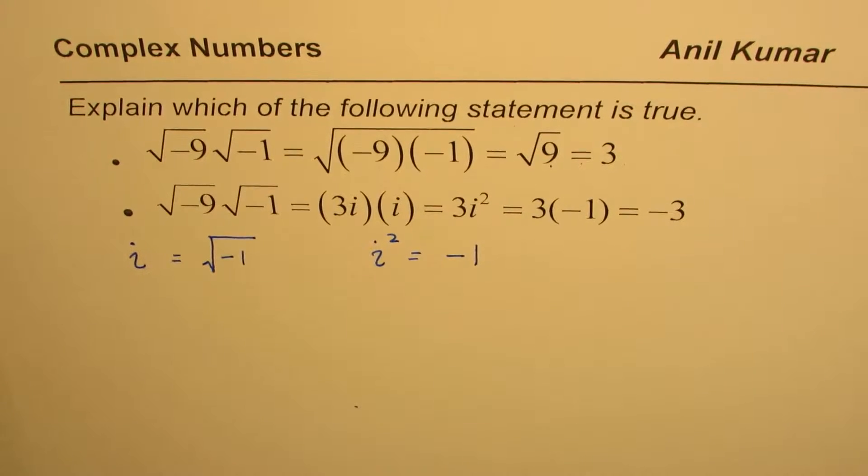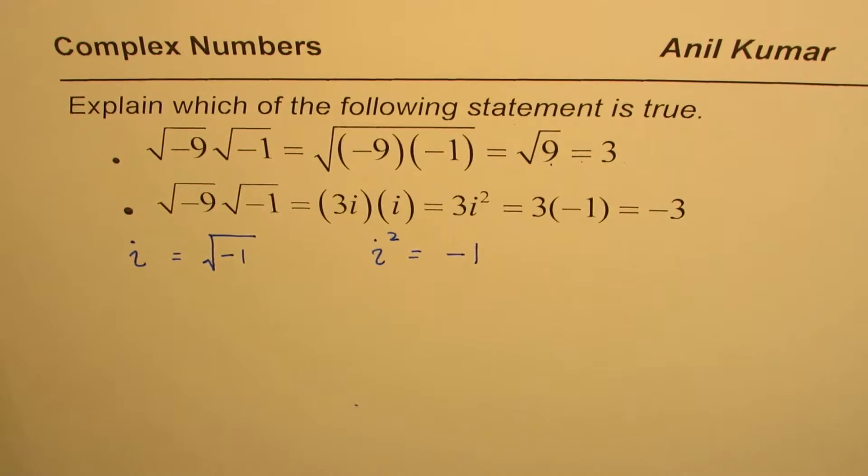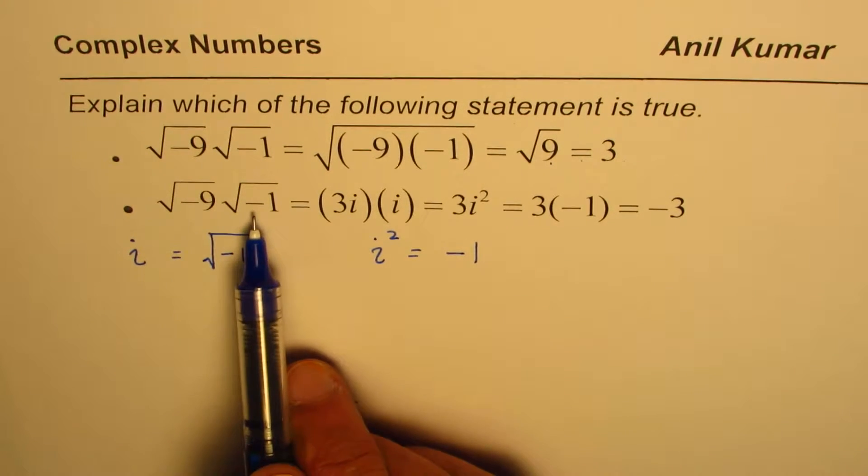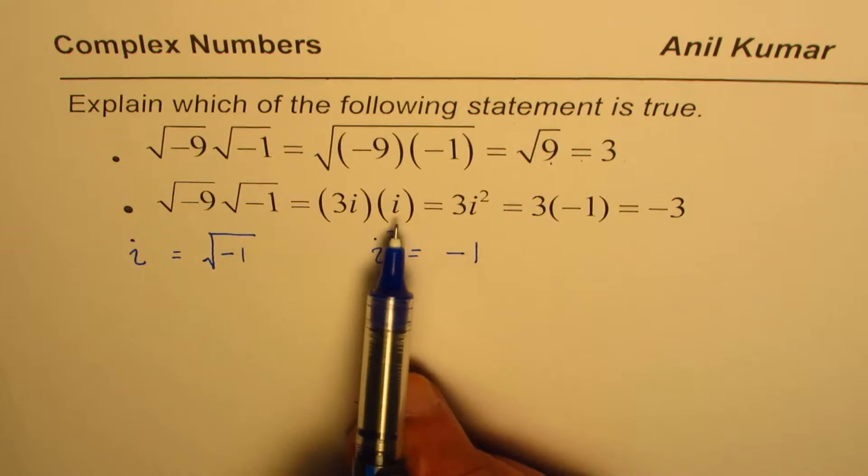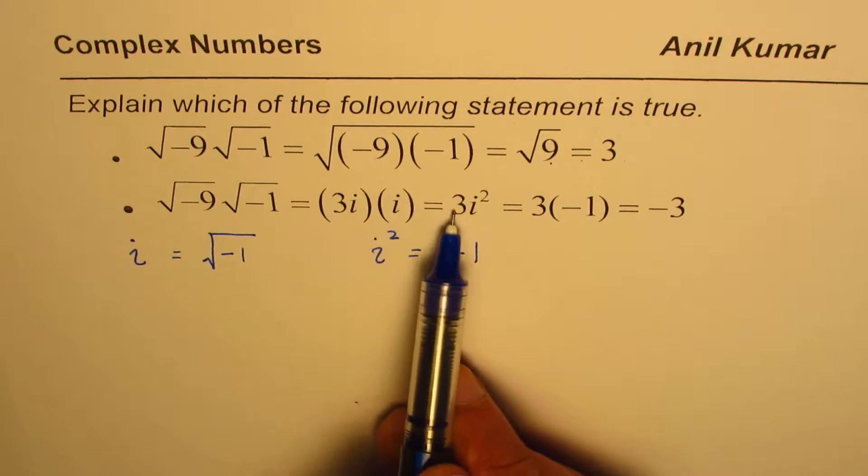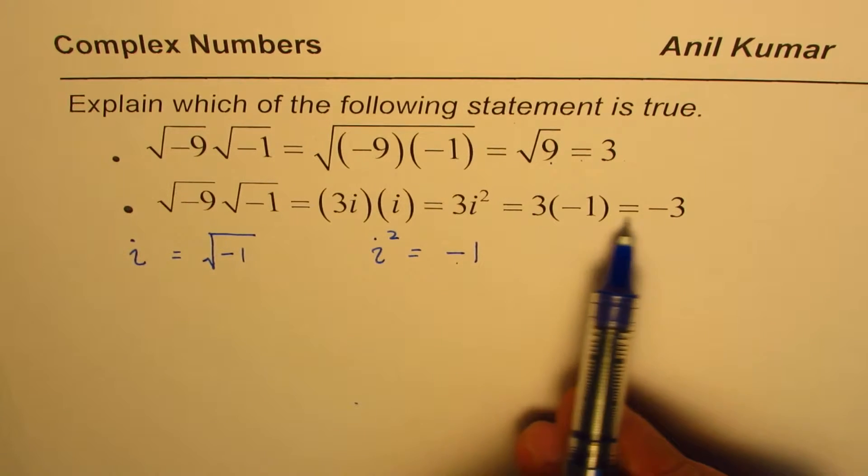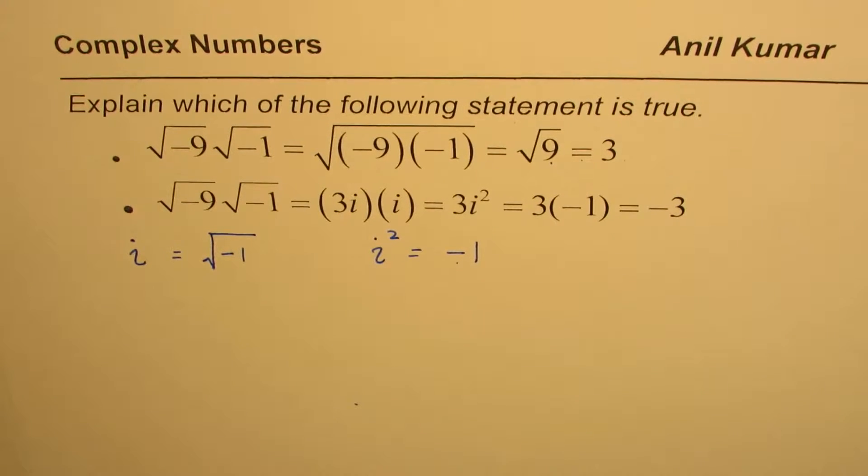So that is when we enter the domain of complex numbers. We could write square root of minus 9 as 3i, square root of minus 1 as i. So when you multiply you get 3i square, and you know i square is minus 1. So 3 times minus 1 gives you minus 3.